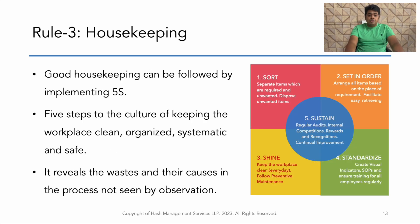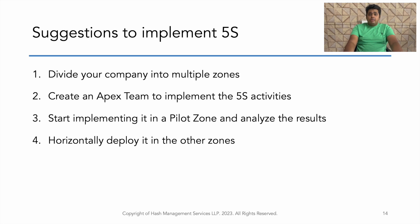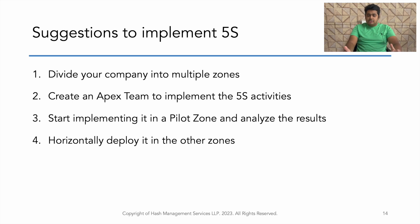The third rule is good housekeeping. Good housekeeping can be followed by implementing 5S. 5S is nothing but 5 steps which will impact your culture to have a clean, safe, and systemized workplace. They are Sort, Set in Order, Shine, Standardize and Sustain. Some suggestions to implement 5S: divide your company into multiple zones; create an Apex team to implement these 5S initiatives; first go with a pilot zone where you implement all the S — 1S, 2S, 3S, 4S and 5S — and analyze the results. Based on the results, horizontally deploy the activities to other zones. This is the best way to implement 5S.